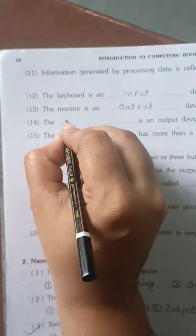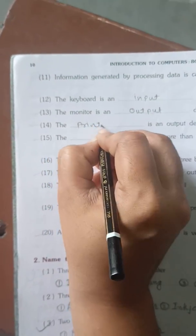The blank is an output device, so printer. What will be here? Printer.